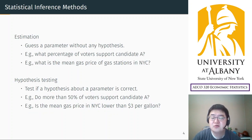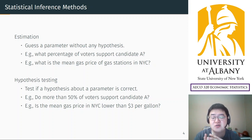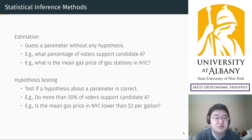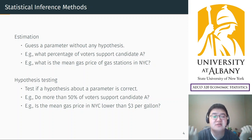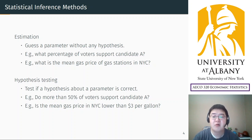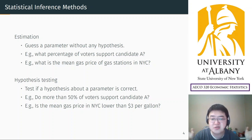Let's think about the two most important statistical inference methods: estimation and hypothesis testing. Estimation is more intuitive because it is simply guessing a parameter without any prior hypothesis. Typical statistics questions are estimation questions — for example, what percentage of voters support candidate A, or what is the mean gas price of gas stations in New York City? It's an open question with no prior knowledge, background hypothesis, or prejudice.